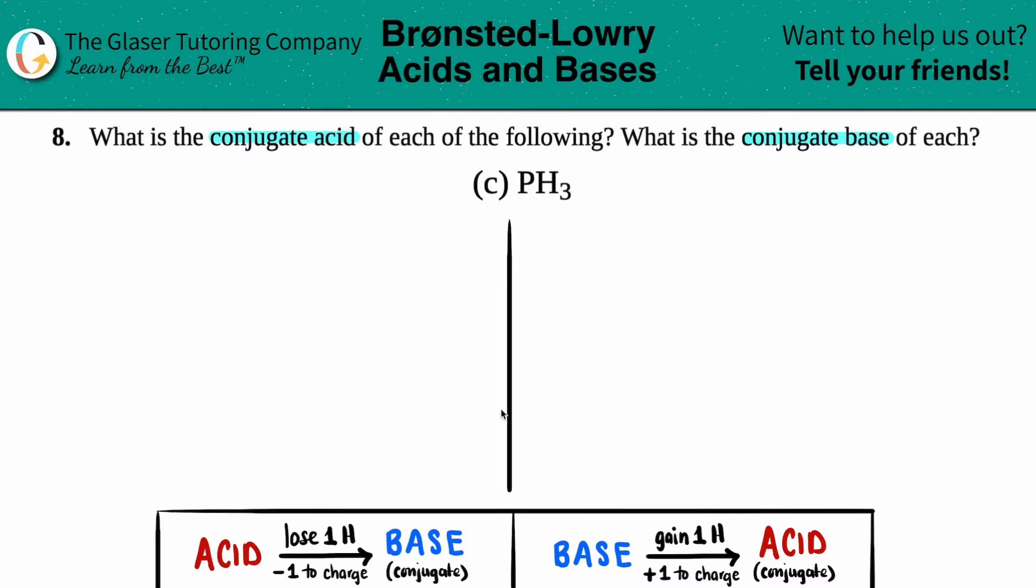All we have to do for this one though is just find out those conjugates. So we're going to follow this kind of base to find out what the conjugate base and the conjugate acid is. So let's pretend that PH3 in a certain solution is acting as an acid. How are we going to find out that conjugate base?